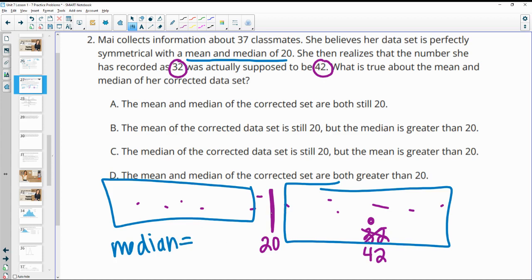But the mean is going to change because we went up 10 numbers when we start adding and dividing. So the mean and median are both still 20? No. The mean of the corrected data set is still 20? No. The average is going to go up. The median is still 20? Yes. But the mean is greater? Yes. Because the mean is going to pull it up higher now that we have a higher data point. So C.